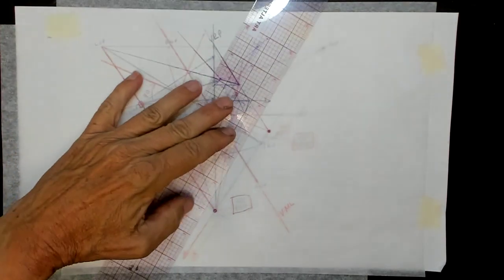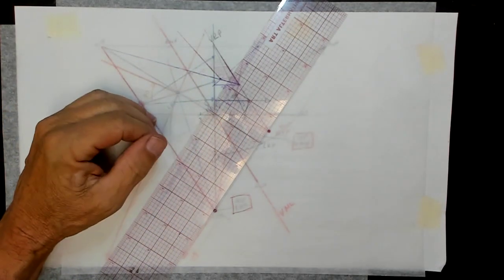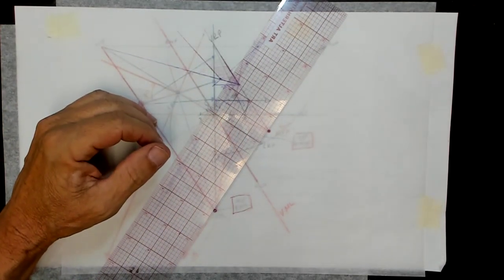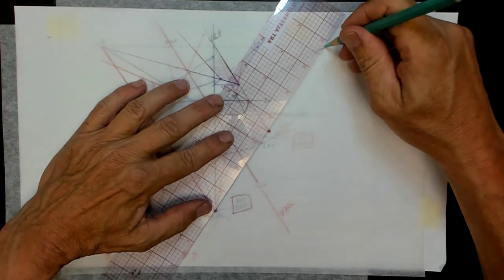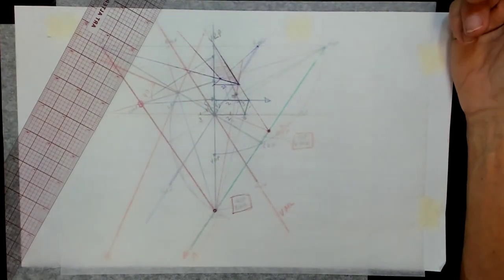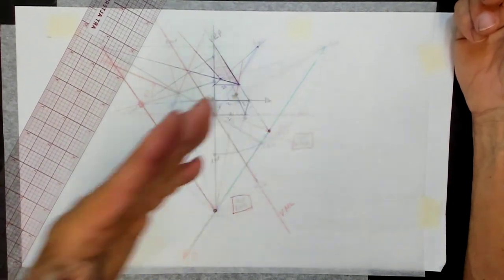So this line that the measuring point is on is at an incline. I think I need to change colors again. The incline is like that. I should just say not an incline, it's just an angled line.